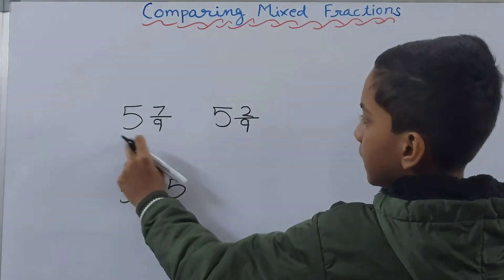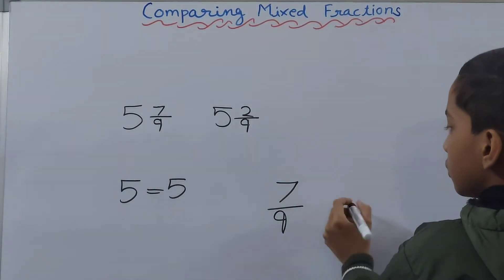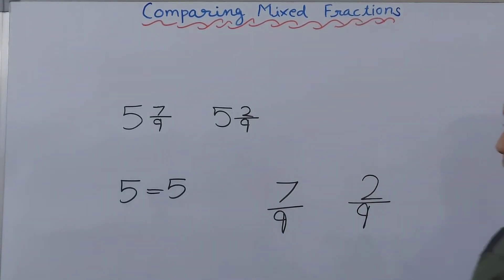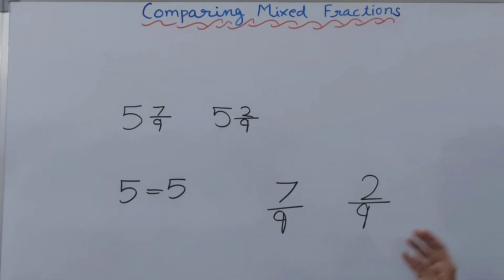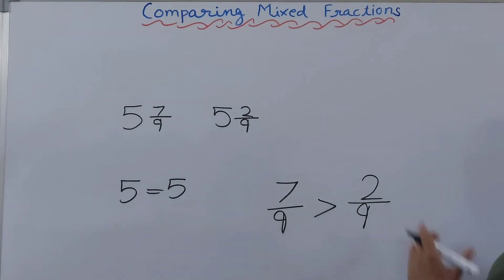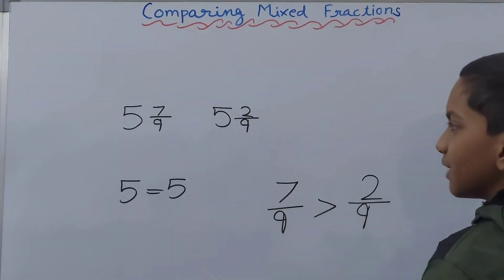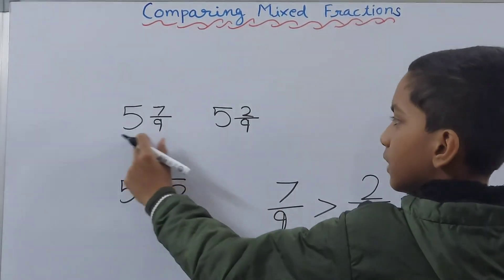In this fraction it is seven upon nine, and in this fraction it is two upon nine. Now we have to compare these fractions. The denominators are equal, so we compare the numerators. Two is here and seven is here, so seven is greater than two. That means seven upon nine is greater than two upon nine, and since seven upon nine belongs to five whole and seven upon nine, that fraction is greater than five whole and two upon nine.